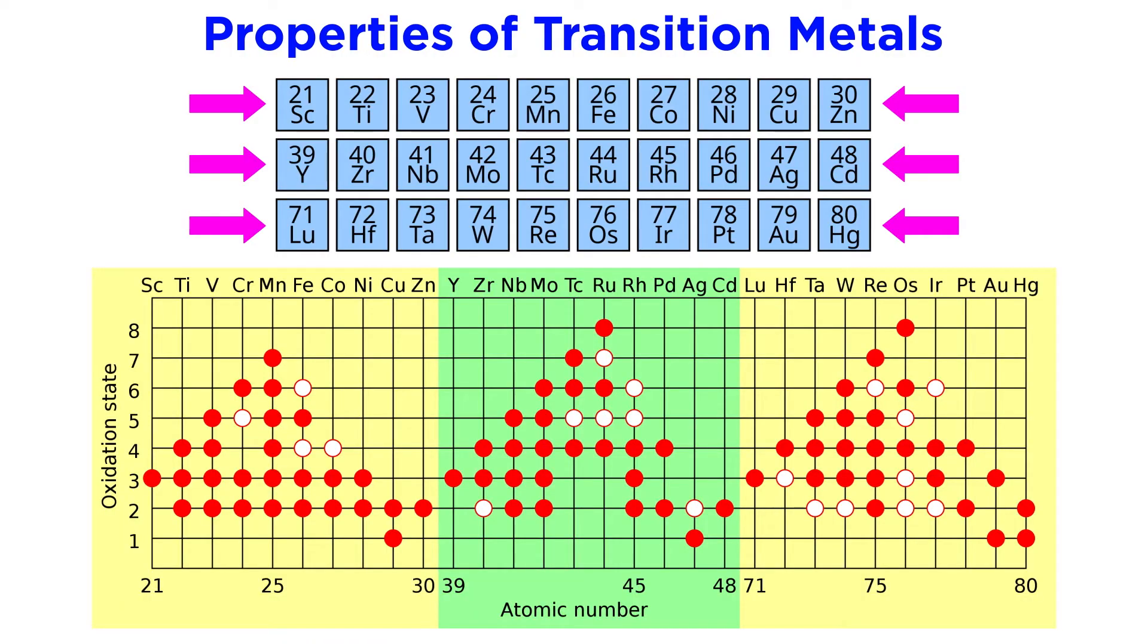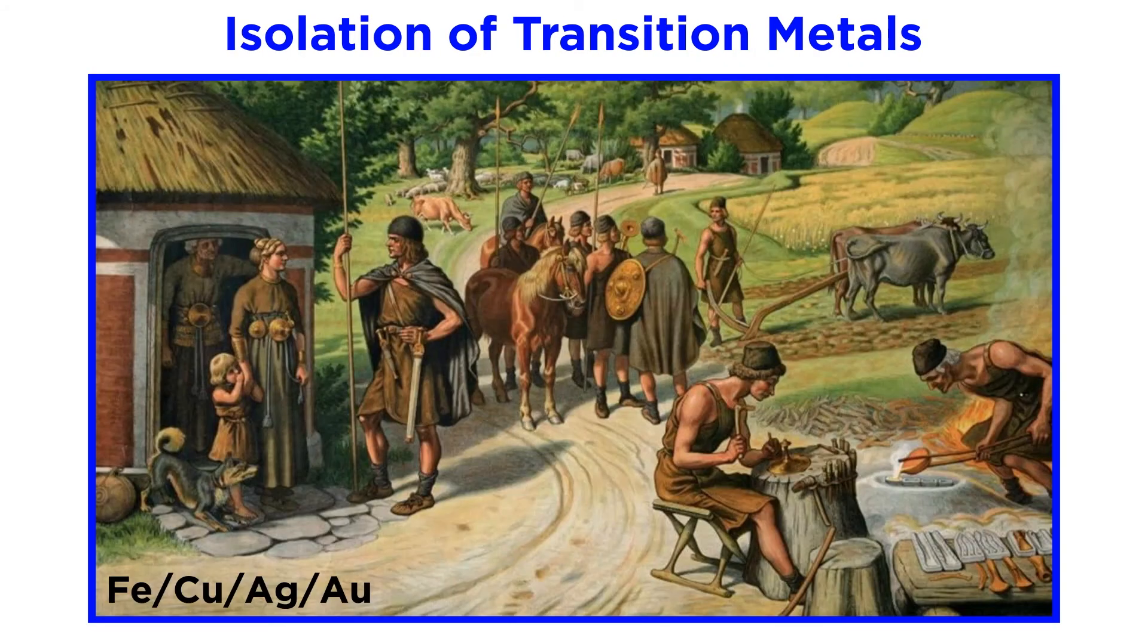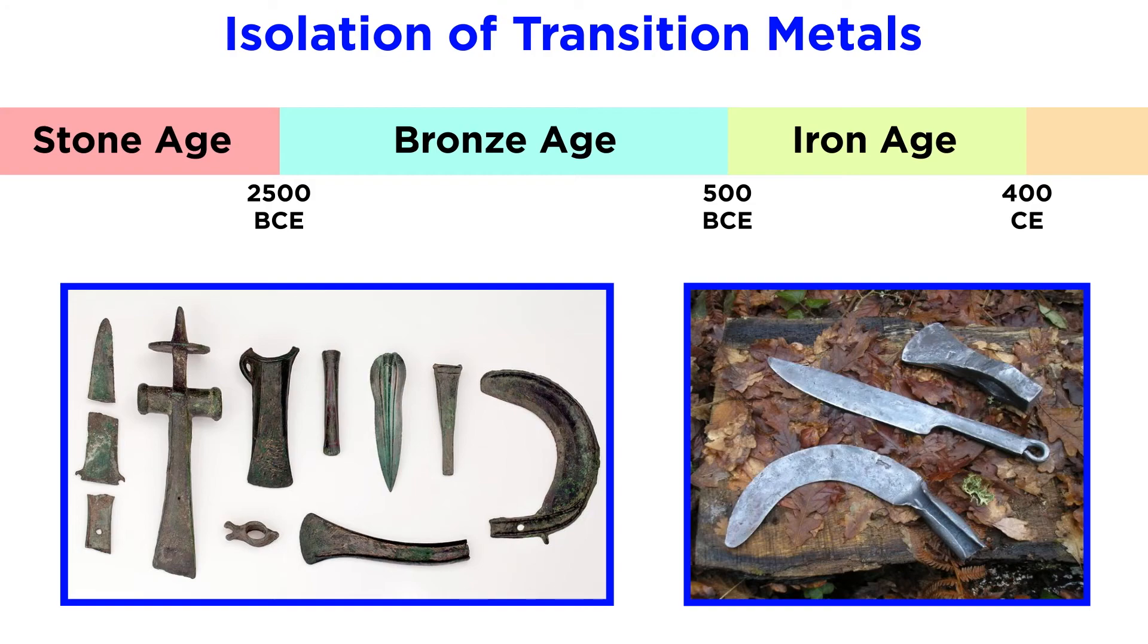Moving down to other periods, higher oxidation states become more and more common for reasons of increasing atomic radius. In terms of isolating these metals, some of them have a very long history, as iron, copper, silver, and gold have been known for most of human civilization. In fact, we demarcate certain periods in human history as the Bronze Age and Iron Age to indicate when we became able to isolate certain metals and use them to make tools, weapons, and other things.